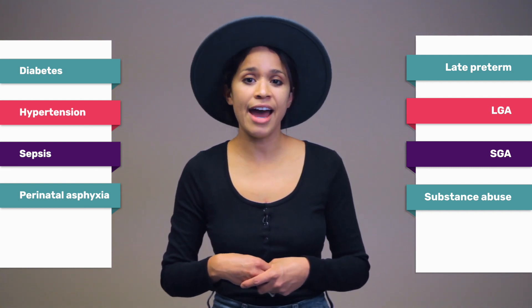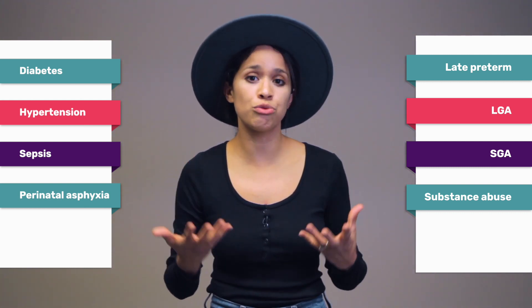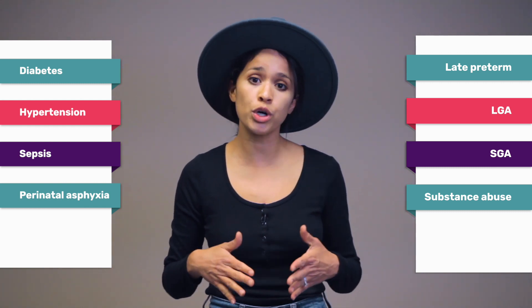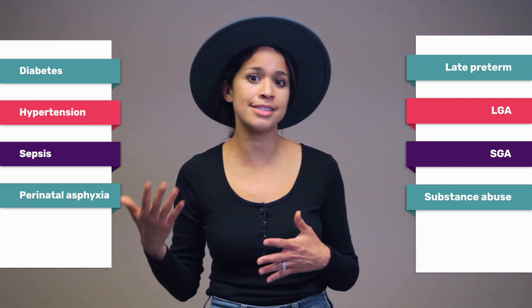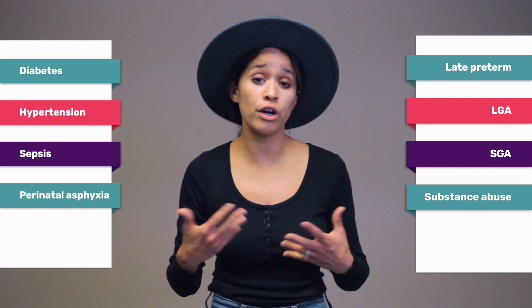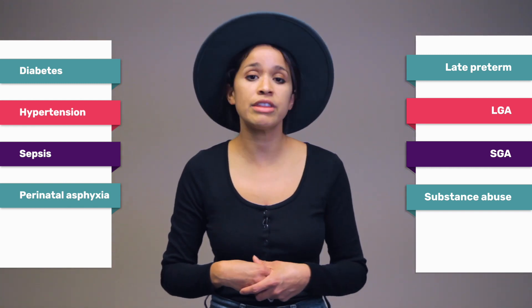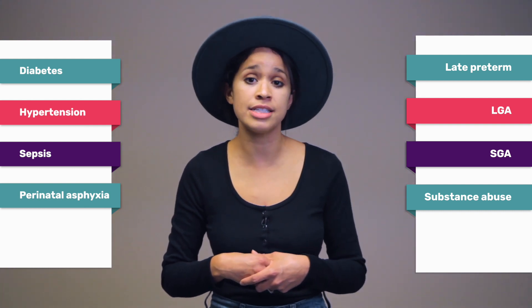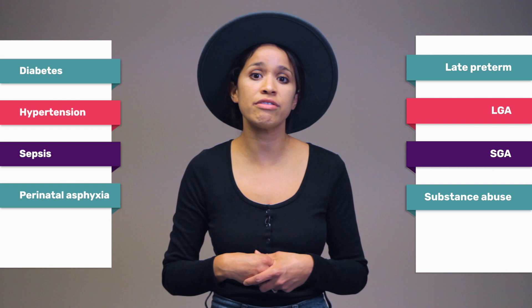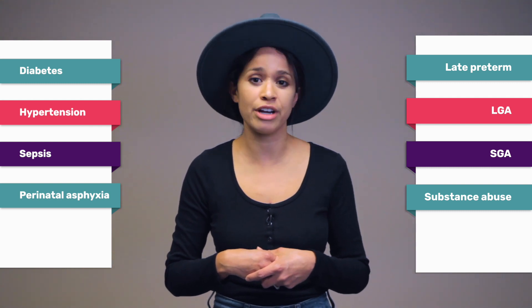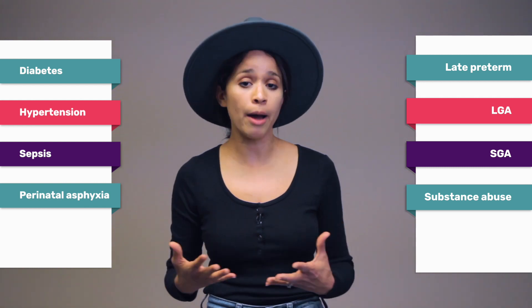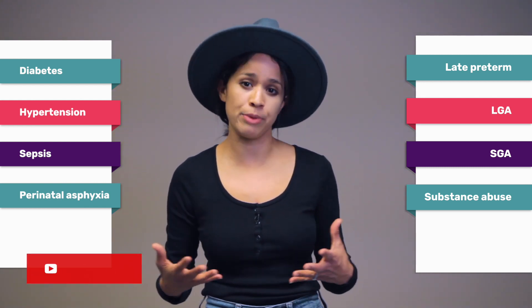In addition to that, as far as the growth of the baby, if the baby is a late preterm between the weeks of 34 to 36 weeks plus six days, they would be part of that population as well. If they are large for gestational age, which is greater than the 90th percentile, or if they are small for gestational age, which is less than the 10th percentile, would be part of your population that you want to keep on your radar.